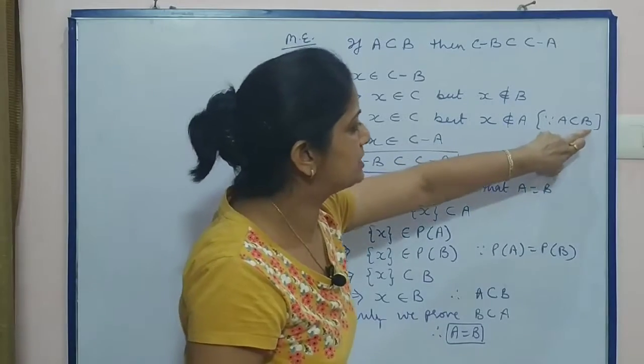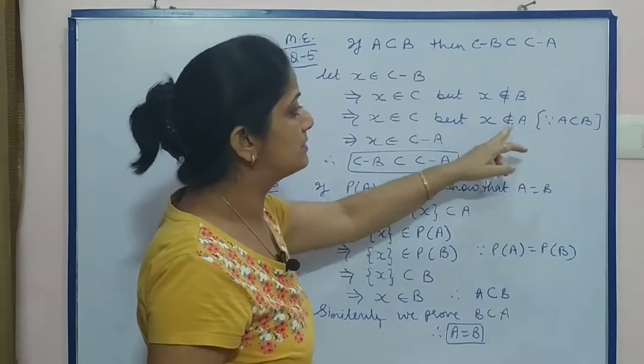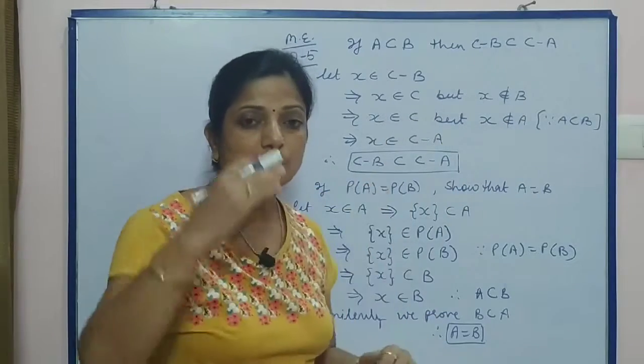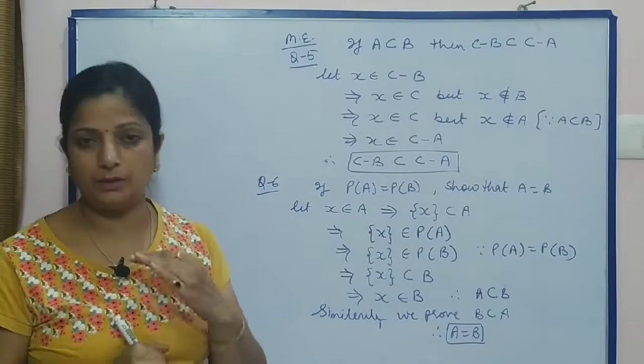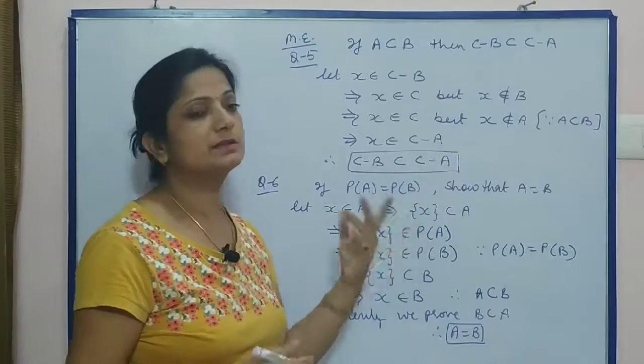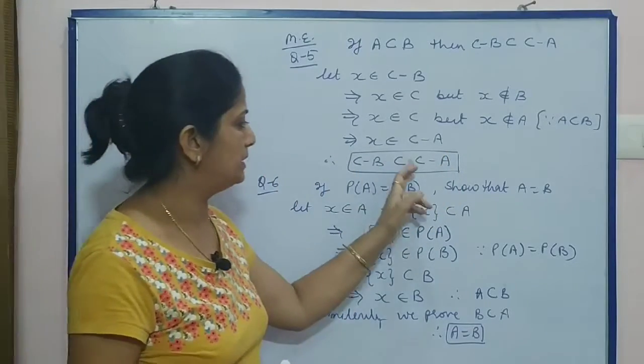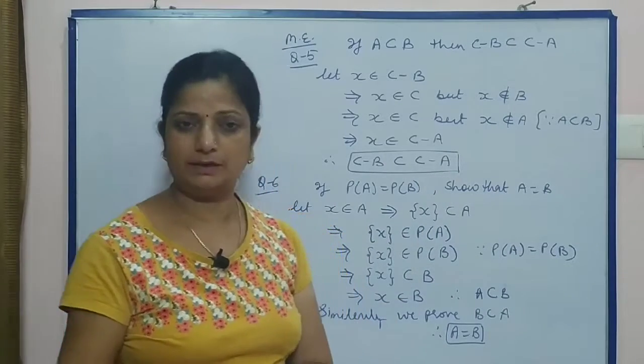Since A is subset of B, that means x belongs to C as it is, but x does not belong to A, because when an element is not in B, then it will not be in A. Now, x belongs to C minus A, and that is sufficient to prove that C minus B is subset of C minus A.